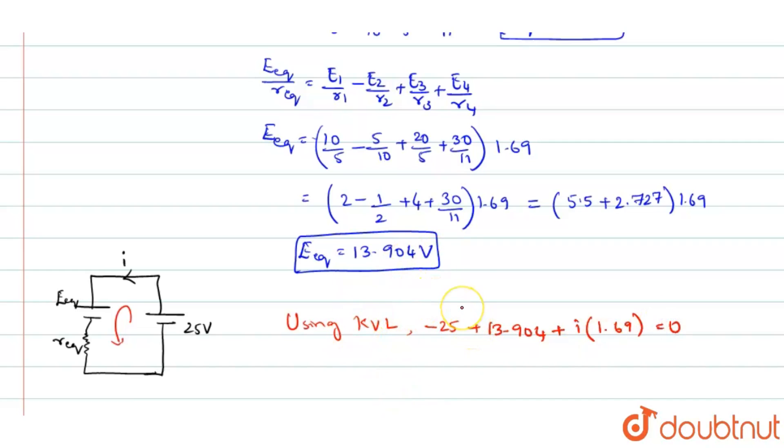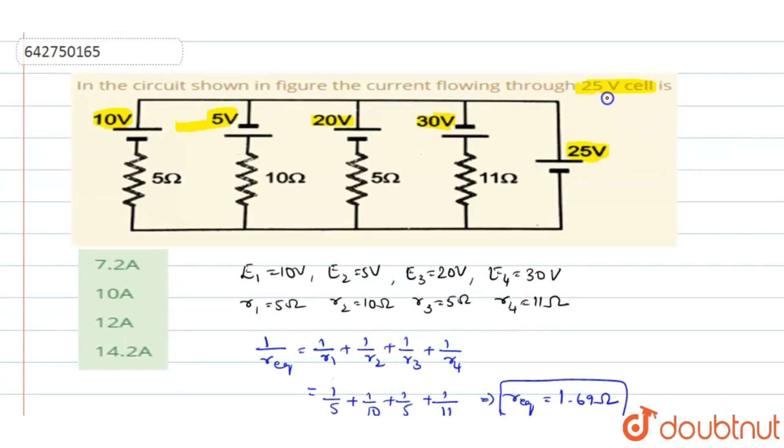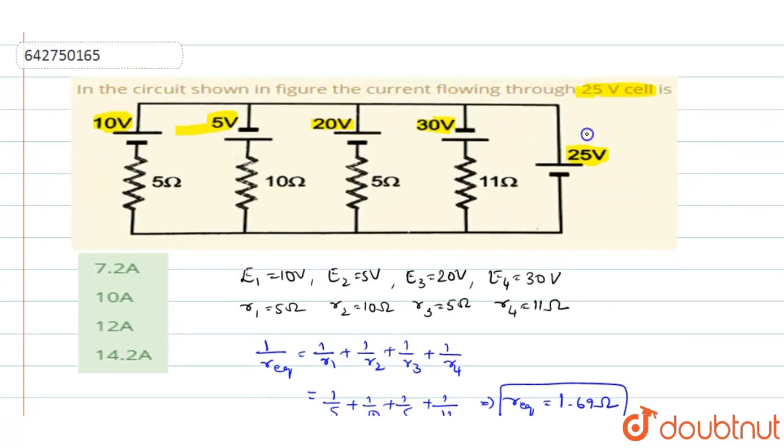So when you simplify this out, you will get I value as 6.56 ampere. This is the current from the 25 volt battery. That is what they have asked for, the current flowing through 25 volt battery is 6.56 ampere.